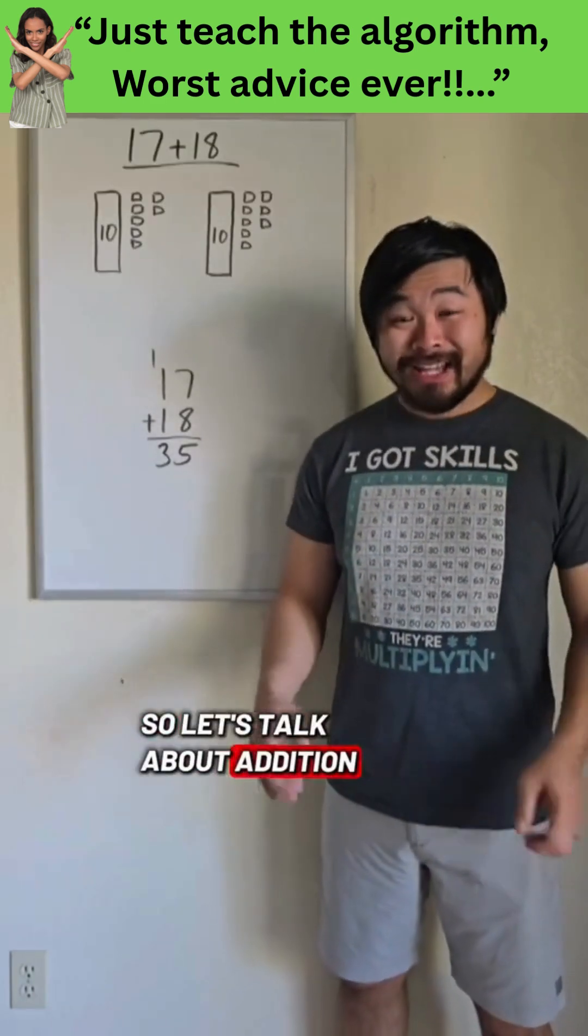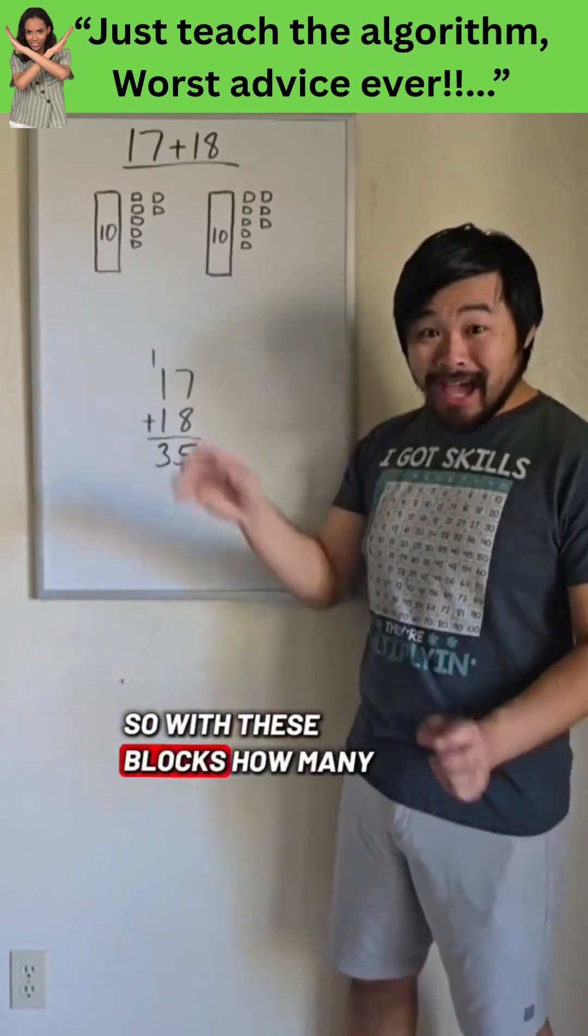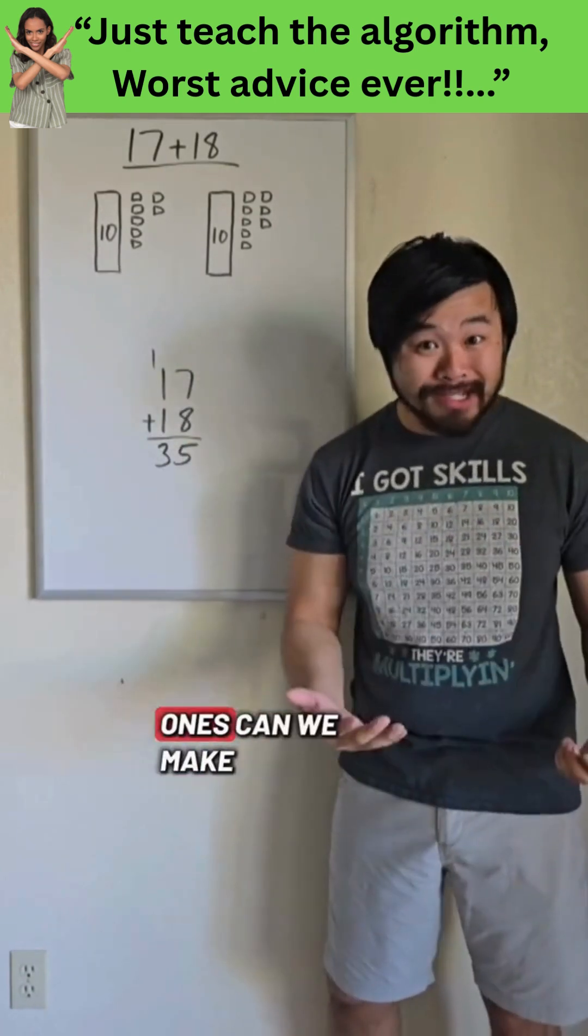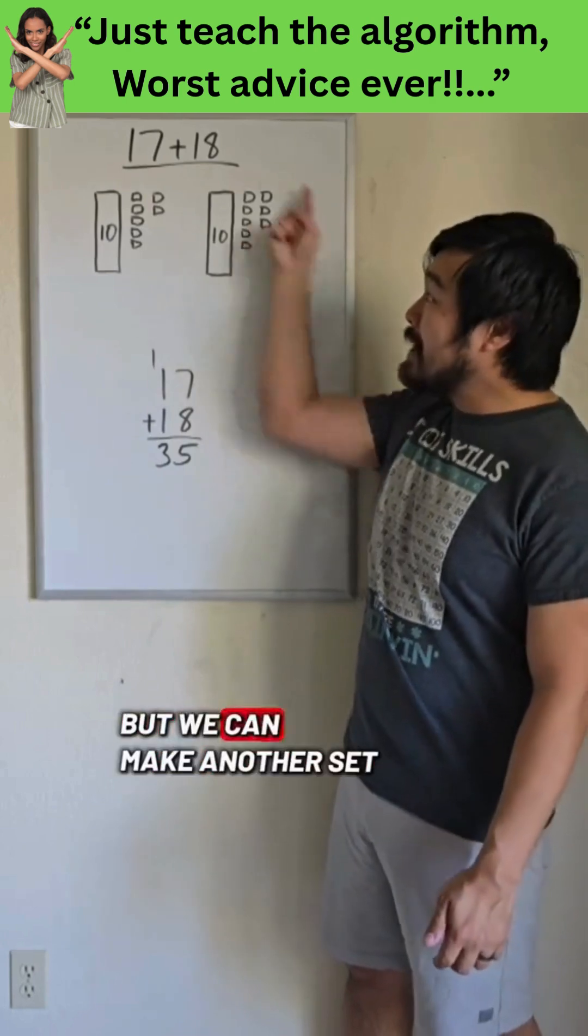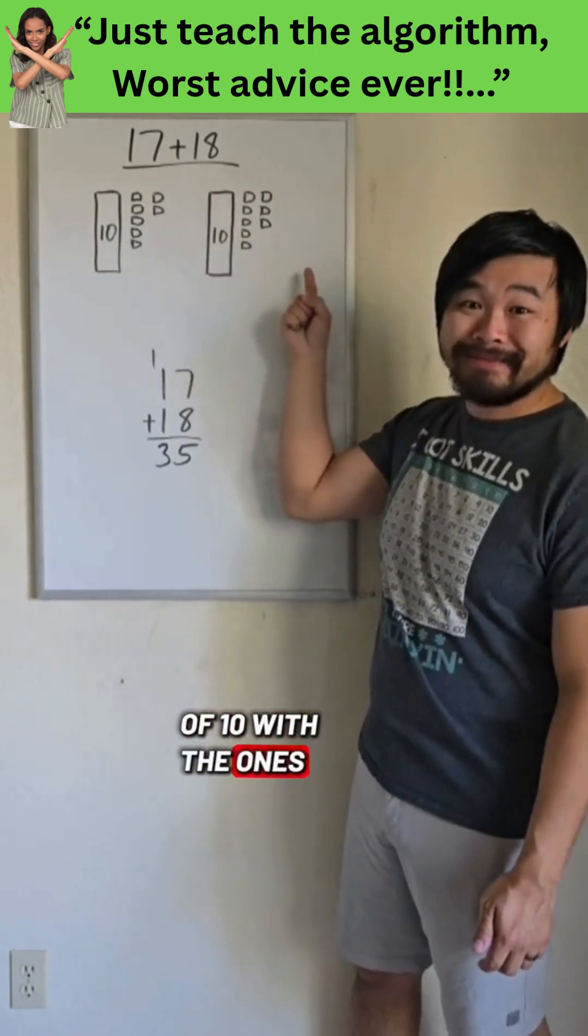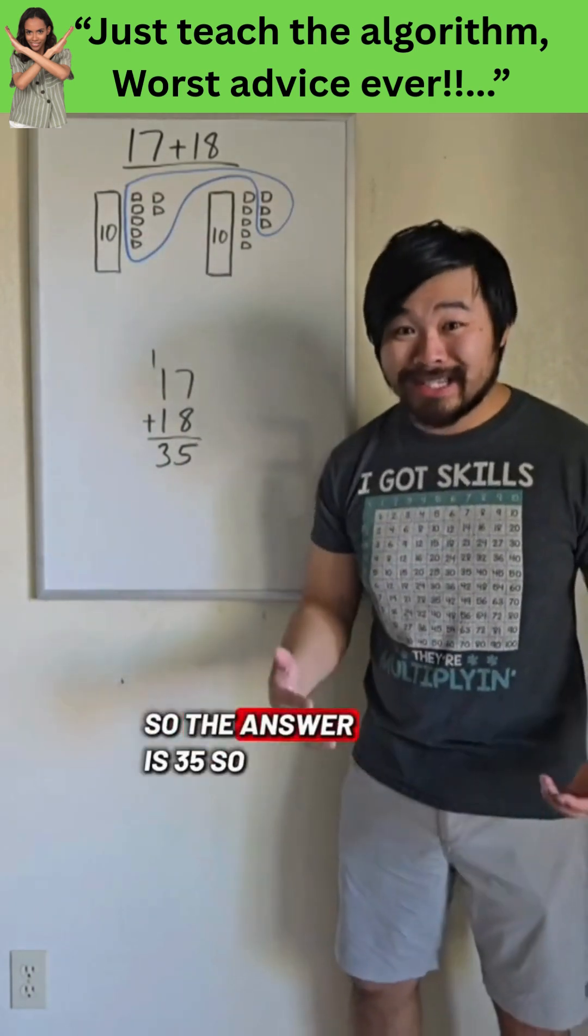So let's talk about addition. Let's do 17 plus 18 with these blocks. So with these blocks, how many sets of 10 and how many 1's can we make? Well, we have 2 sets of 10 already, but we can make another set of 10 with the 1's. So we can see that we can make 3 10's and 5 1's. So the answer is 35.